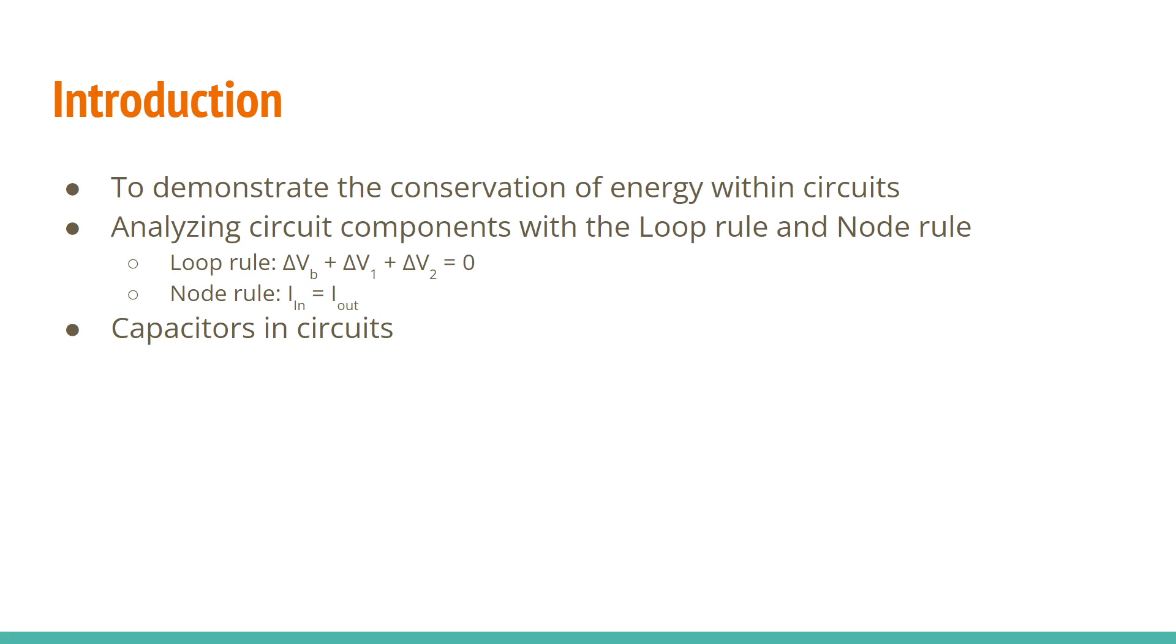And to do this, we are analyzing circuit components using the loop rule and the node rule. The loop rule states that for each section of wire or part of the circuit, all the voltages will add up to zero no matter what trip you take. And then the node rule is that the current going into a node is the same as the current going out of a node. We're also going to be looking at capacitors in the circuit when they're charged and discharged.